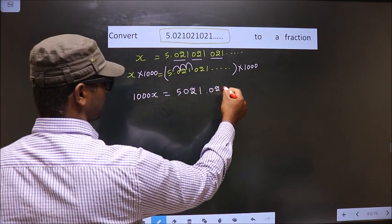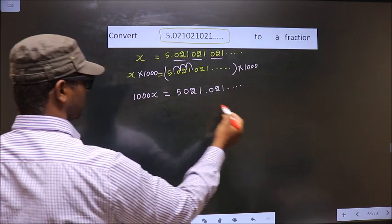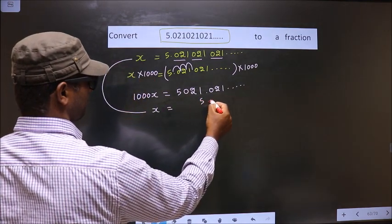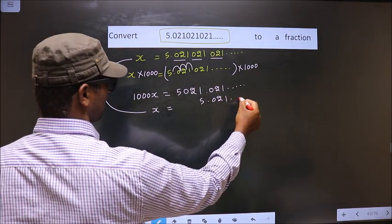021, and so on. Now I write x below this: 5.021, and so on.